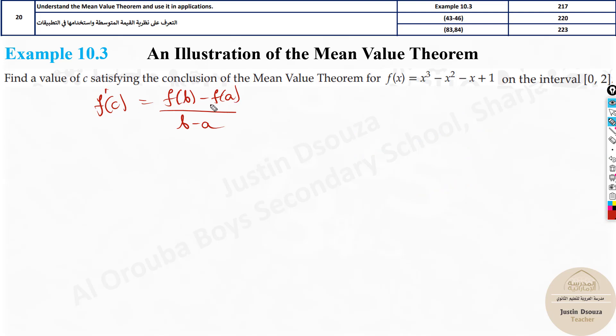So basically, if you solve this formula, you will get it. Now, we have to solve f of b, f of a. What is f dash of c? We will write it in a while. But what is f of b? This is a. This is b. It will be f of 2 minus f of 0 divided by 2 minus 0. How do we find f of 2? That is equal to 2 cubed minus 2 squared minus 2 plus 1.